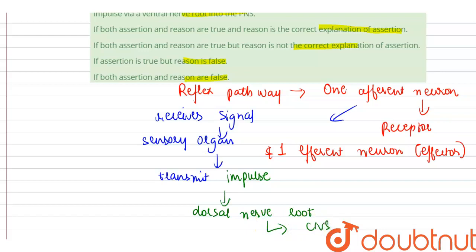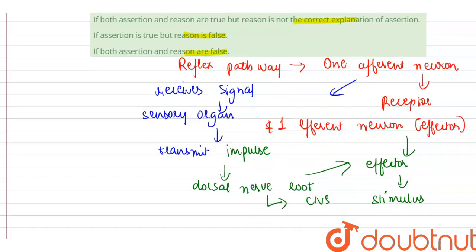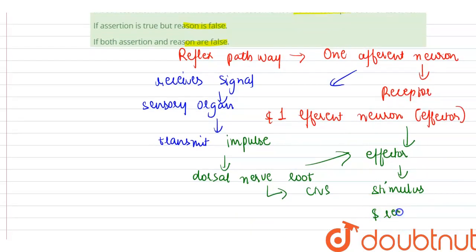And the efferent neuron, that is effector, then carries signals from the CNS to the effector, and the stimulus and response thus forms a reflex arc.